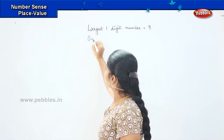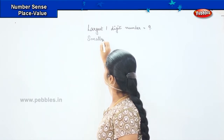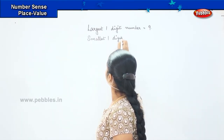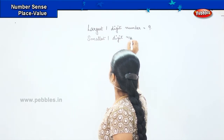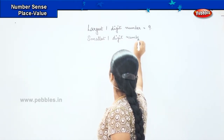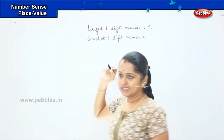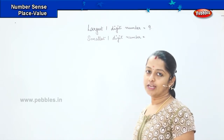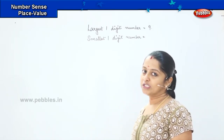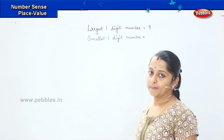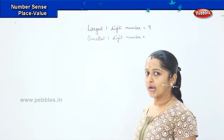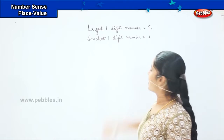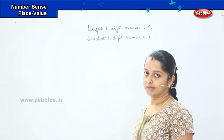What is my smallest one-digit number? Did you say zero? Zero has got no value, right? So what is my smallest one-digit number? Did I hear one? Correct. My smallest one-digit number is one.